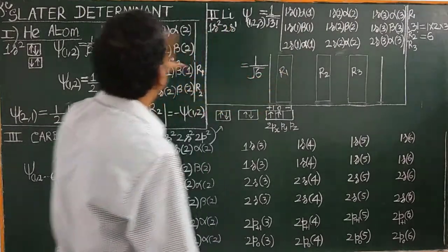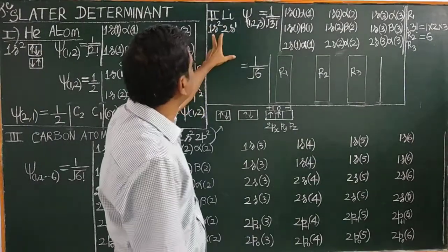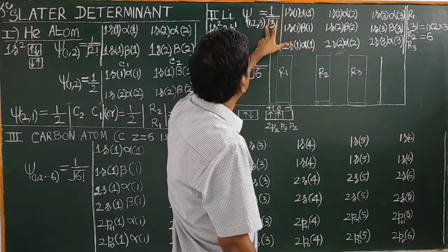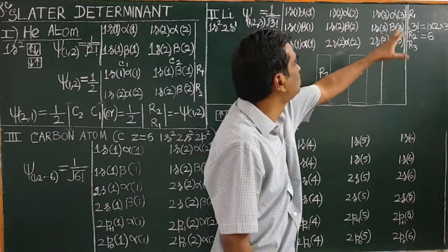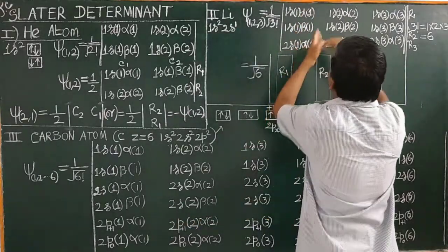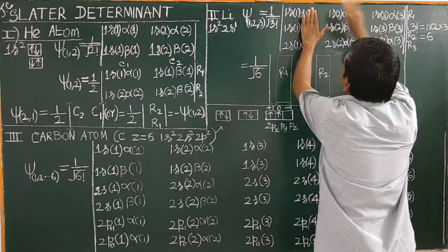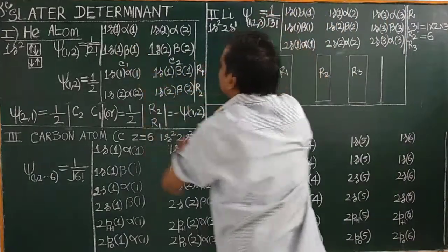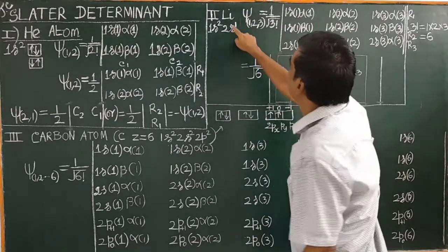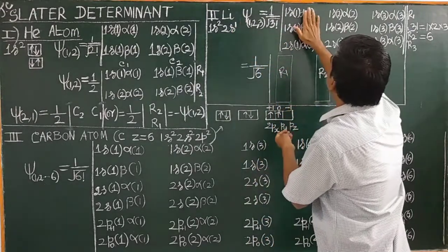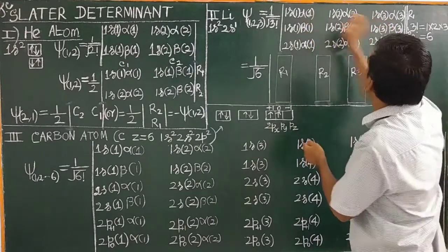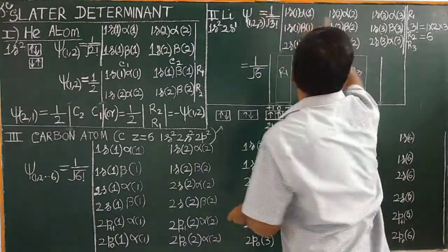Now let us see the lithium atom. You can write very easily for lithium atom. The electronic configuration is 1s², 2s¹, therefore there are three electrons. Psi(1,2,3) equals one over the square root of 3 factorial, which is one over the square root of 6. You first write the spatial part: 1s(1), 1s(1), 1s(1). There are two electrons in 1s and one electron in the 2s orbital, therefore 2s(1). Then 1s(2), 1s(2), 2s(2), and 1s(3), 1s(3), 2s(3), because there are three electrons.